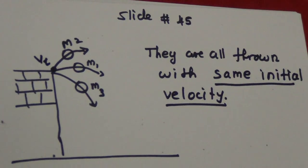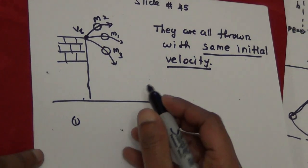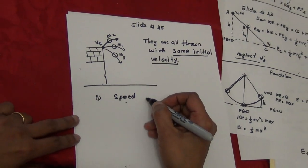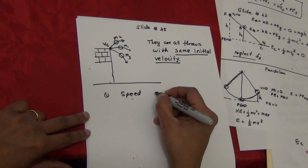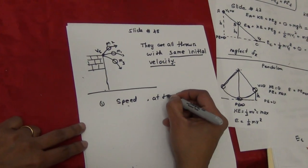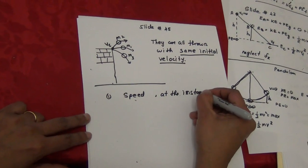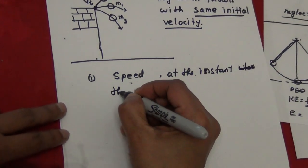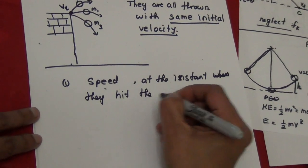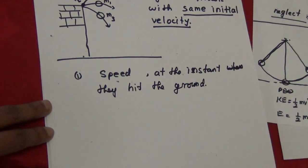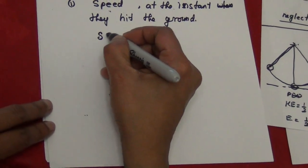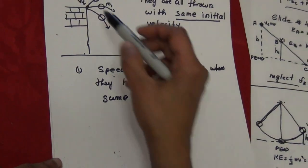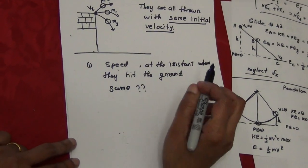The same initial velocity v_i is given to all three. The question is: what are the speeds of each mass at the instant they hit the ground — will the final speeds be different or the same? The answer is they are the same, even though the masses are different.